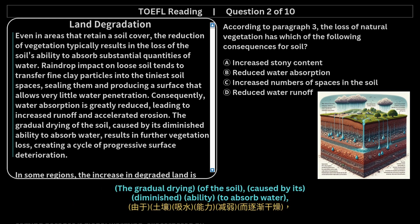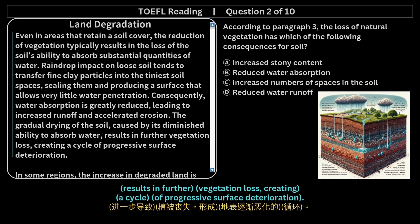The gradual drying of the soil, caused by its diminished ability to absorb water, results in further vegetation loss, creating a cycle of progressive surface deterioration.